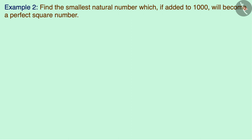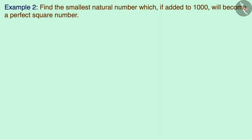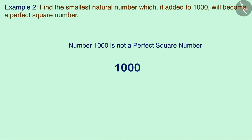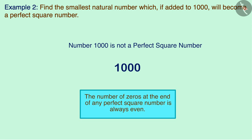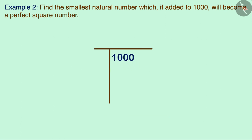Let us now see another example: find the smallest natural number which, if added to 1000, gives us a perfect square number. The number 1000 is not a perfect square number because the number of zeros at the end is odd, and we know that the number of zeros at the end of any perfect square number is always even. To solve this, let us first find the square root of 1000 using the division method.